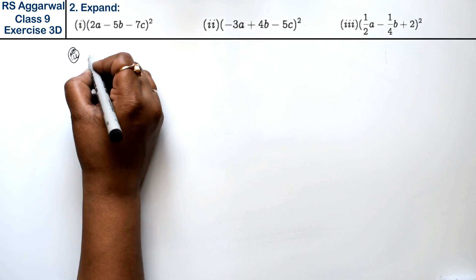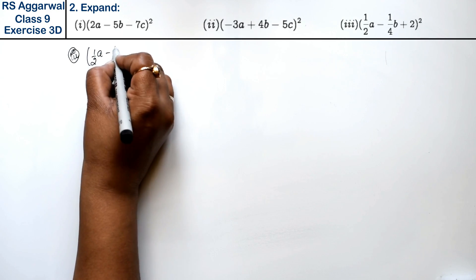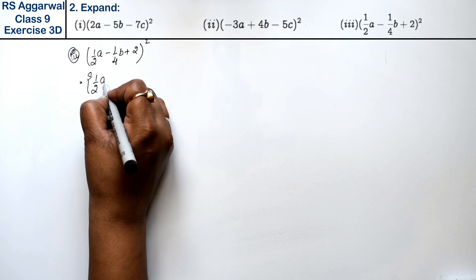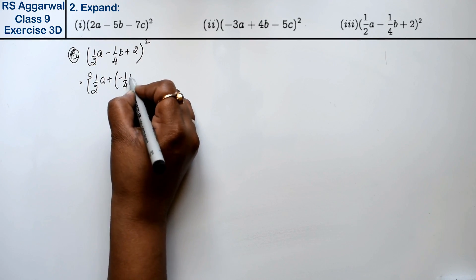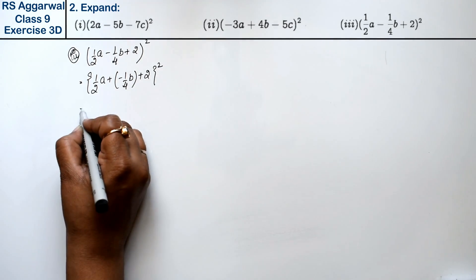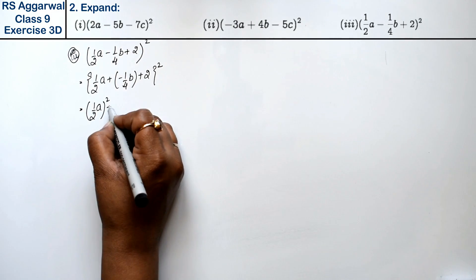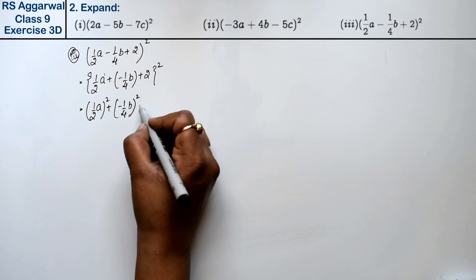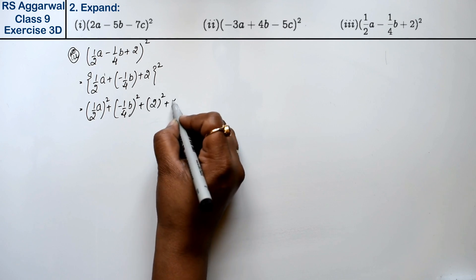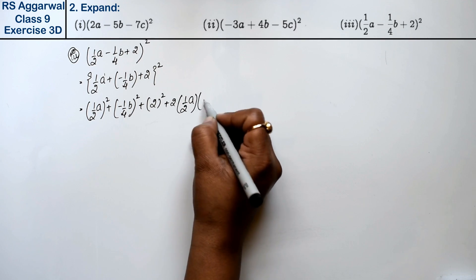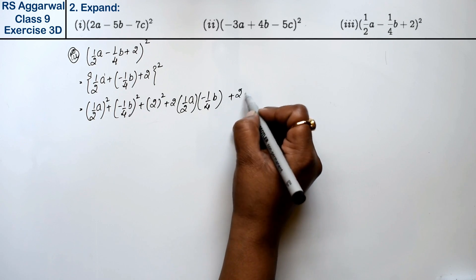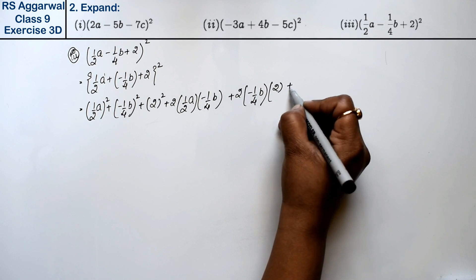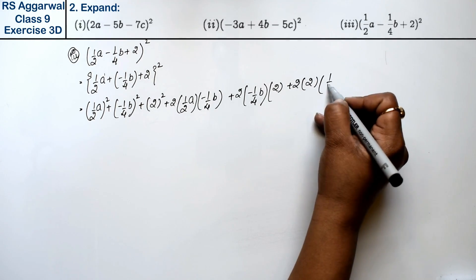Let's do the third part. Third part is (1 upon 2A minus 1 upon 4B plus 2) whole square. We can write it as (1/2 A) plus (minus 1/4 B) plus (2) whole square. Using the formula: A square plus B square plus C square plus 2AB plus 2BC plus 2CA — where A is 1/2 A, B is minus 1/4 B, and C is 2.